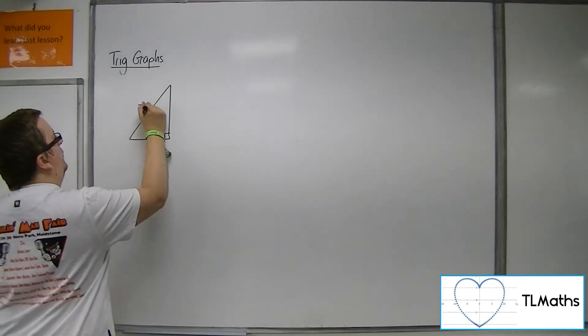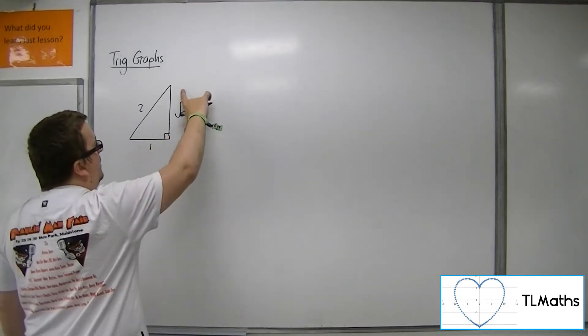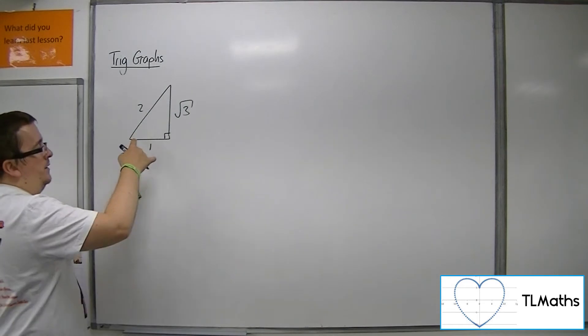Here's the first one, 1, 2, root 3. So because that side is shorter than that one, this angle will be larger.